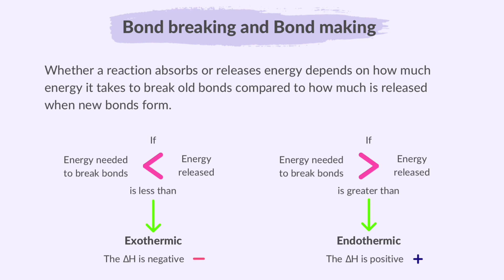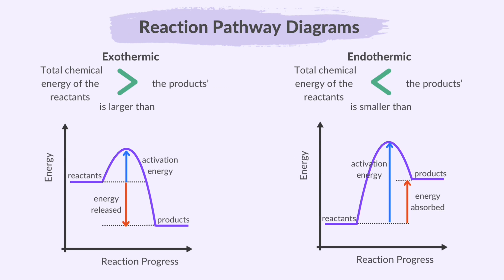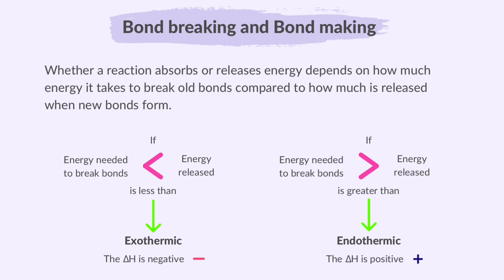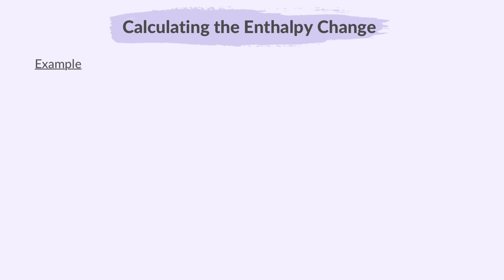Please don't get confused with these energy levels and the energy levels on a reaction pathway diagram. In a reaction pathway diagram, we are talking about the total chemical energy of the reactants and the products. But here we are talking about how much energy a reaction absorbs to break bonds versus how much energy it releases when new bonds form.